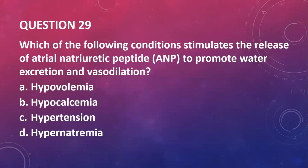Question twenty-eight: what is the primary function of the osmoreceptors in the hypothalamus in maintaining water balance? That will be control of thirst perception. Question twenty-nine: which condition stimulates the release of atrial natriuretic peptide to promote water excretion and vasodilation? Anytime you have high blood pressure, that particular peptide is secreted to help promote water excretion and vasodilation.